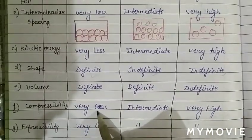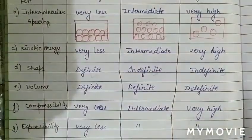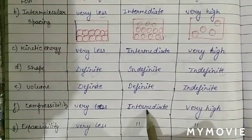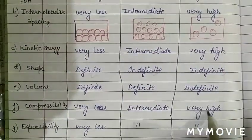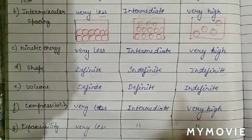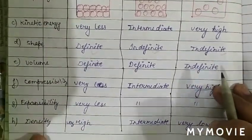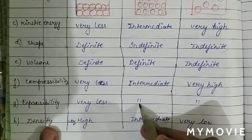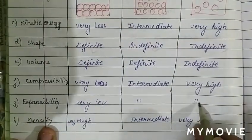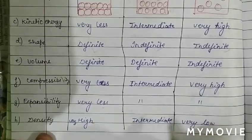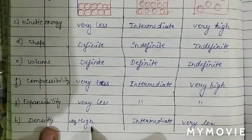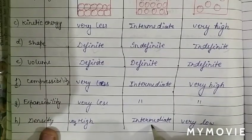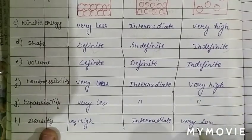Compressibility of solids is less as particles are closely packed, while in liquids it is intermediate, and in gases compressibility is very high. Expansion in solids is less, in liquids it is intermediate, and in gases it is high. Since particles are closely packed, density in solids is high, in liquids it is intermediate, and in gases it is very low.